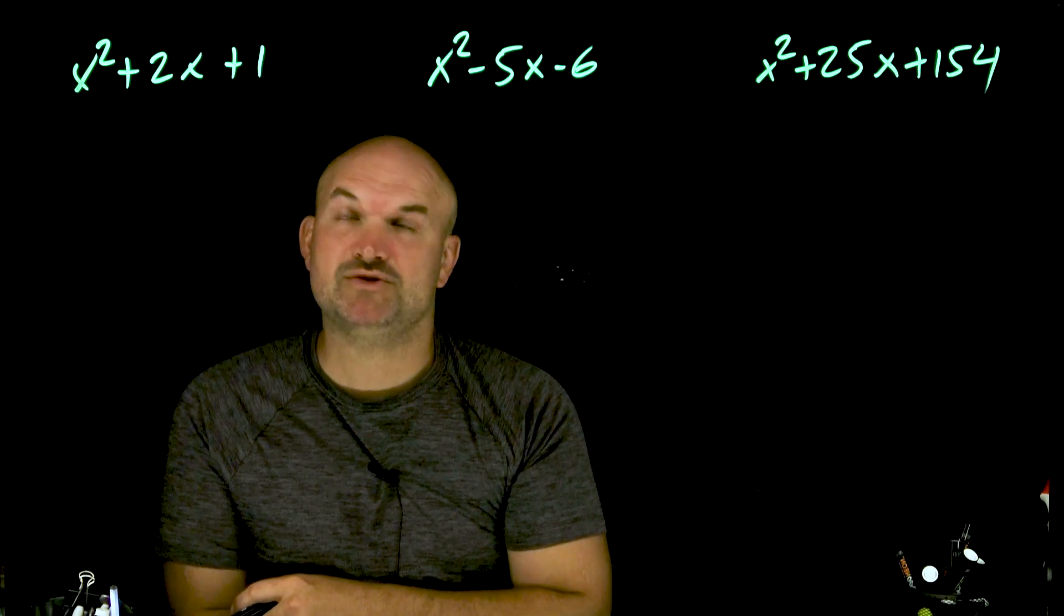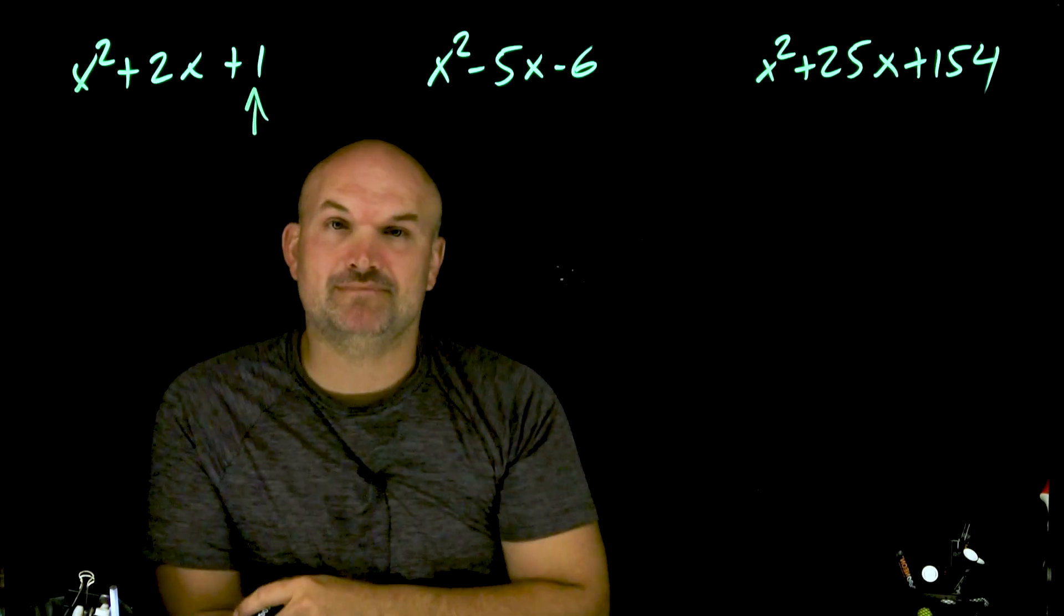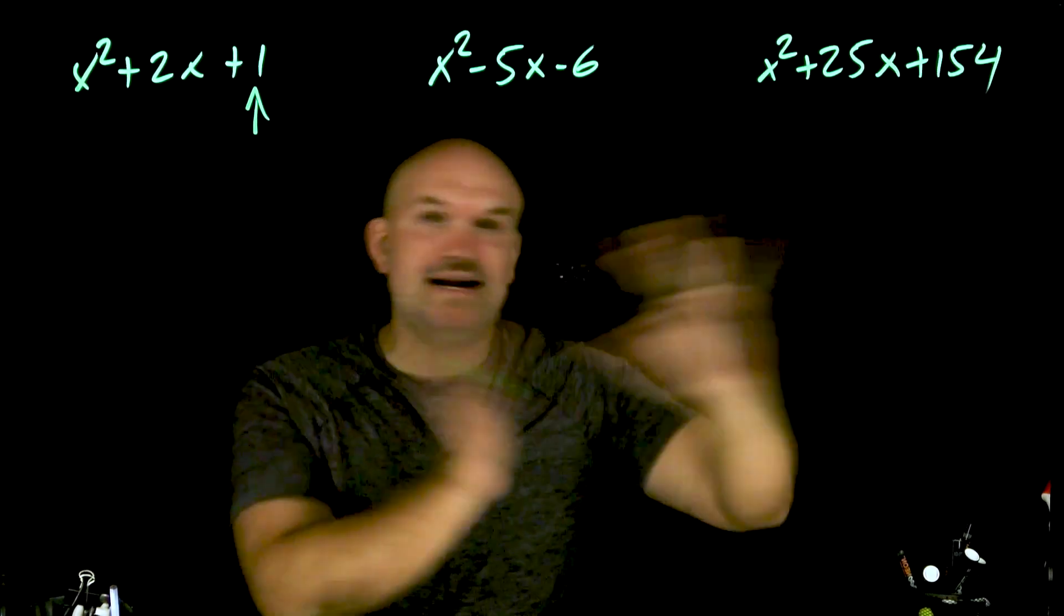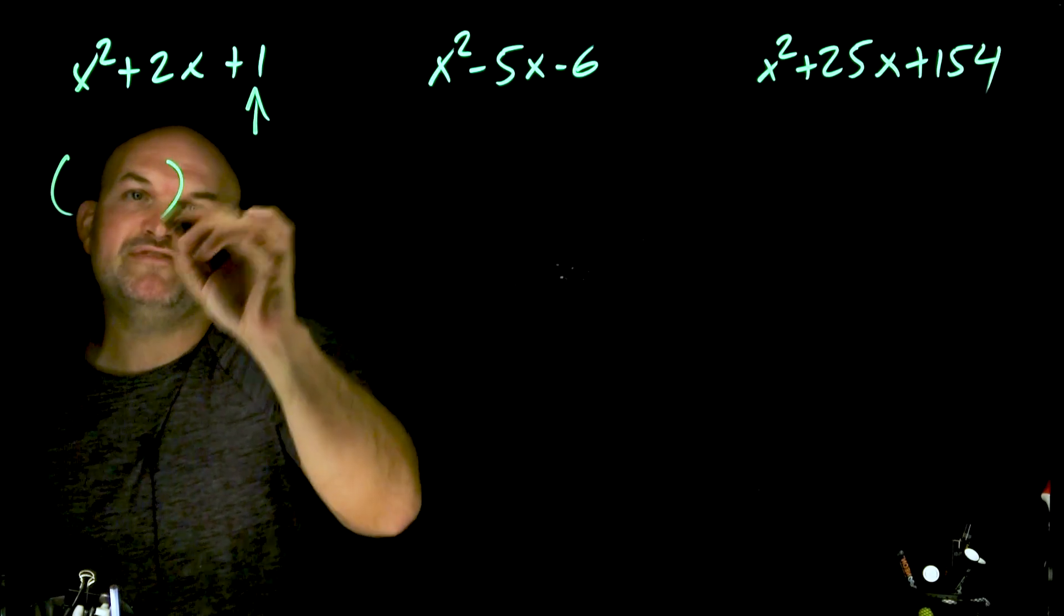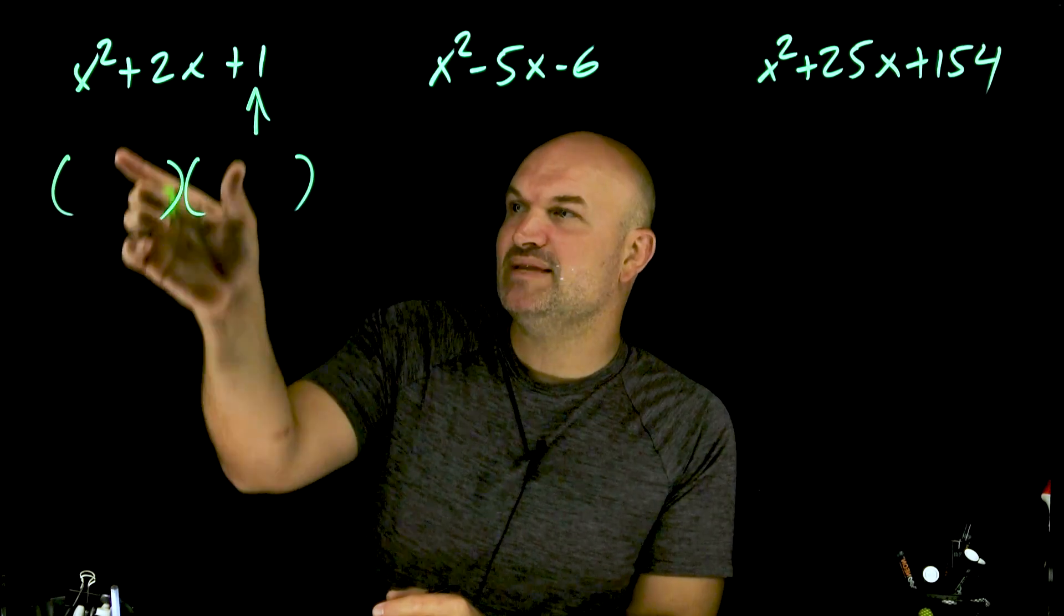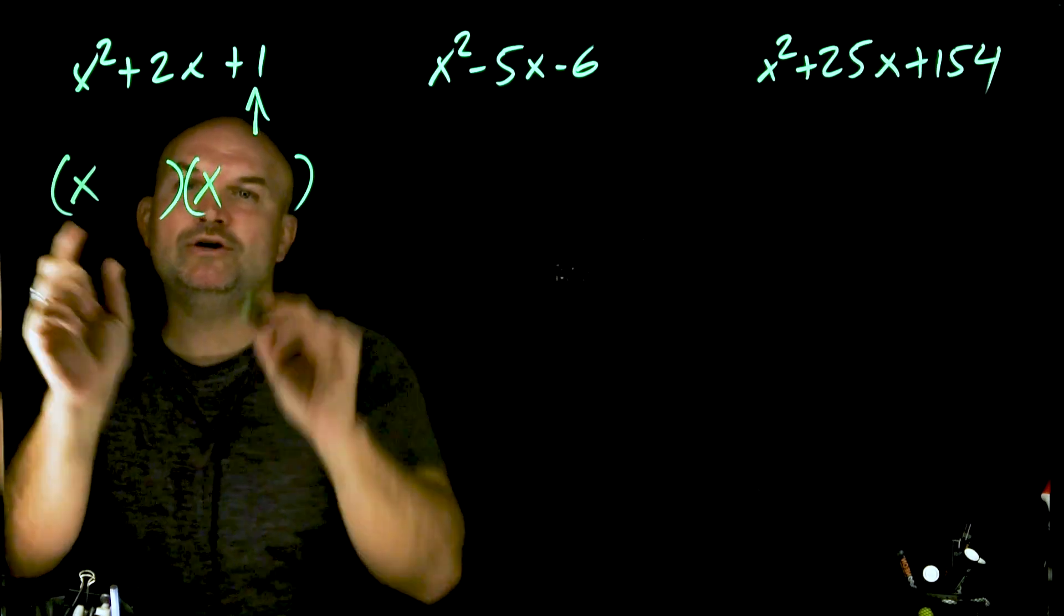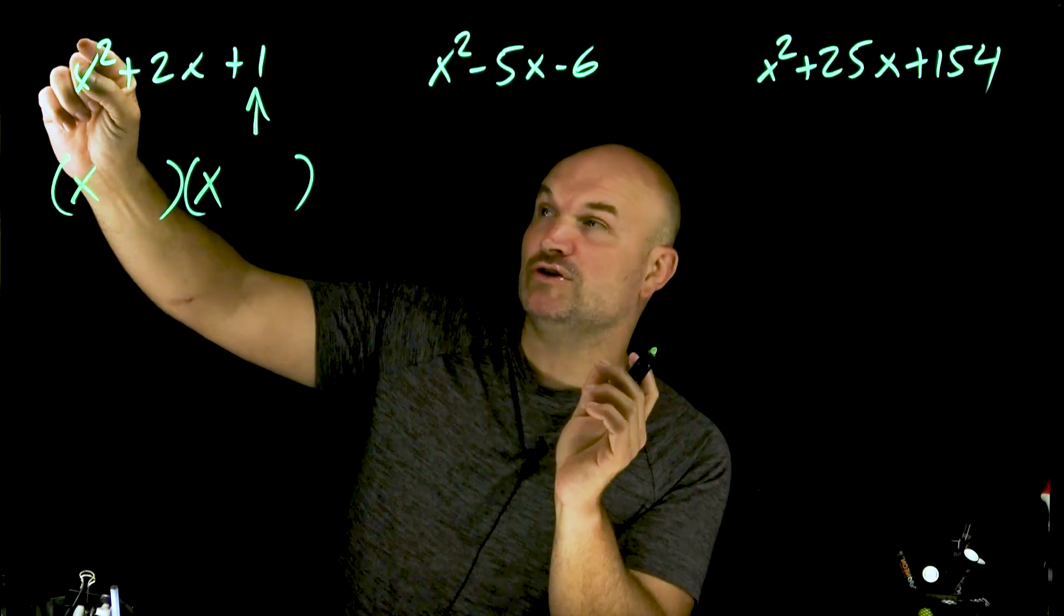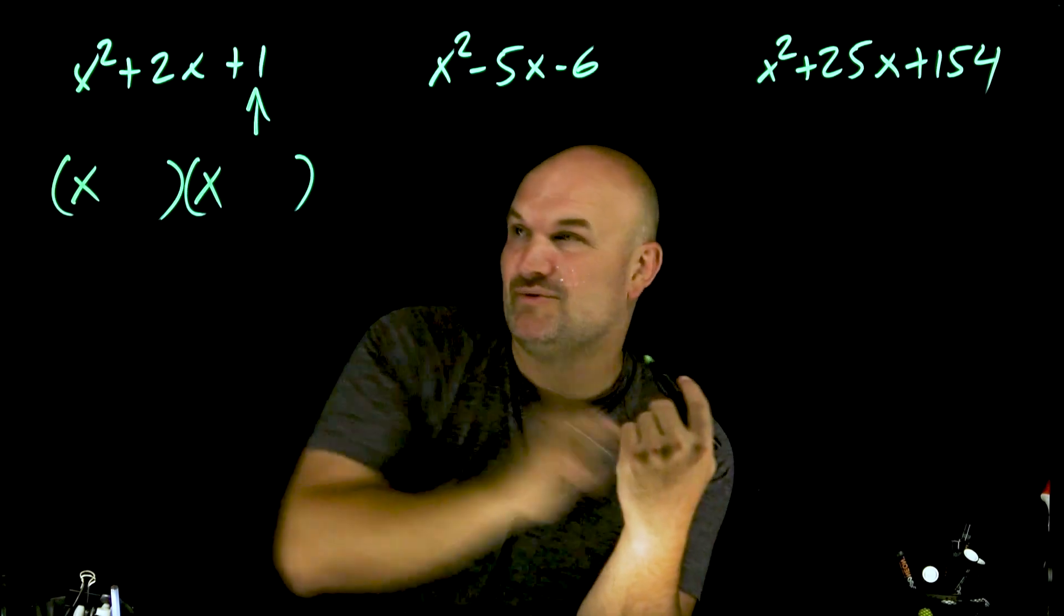So let's take a look at this first example, x² + 2x + 1. The reason this is an easy example is because this last term is 1. The important thing we need to understand is that a quadratic trinomial can always be factored into a product of two binomials. If we multiply this out, the first two terms of my binomials always multiply to give you the first term of your quadratic trinomial, which in this case is x². So we know these first two terms are always going to be x.